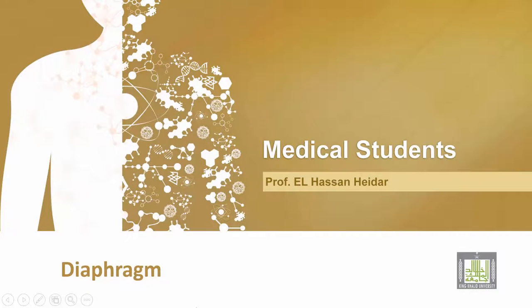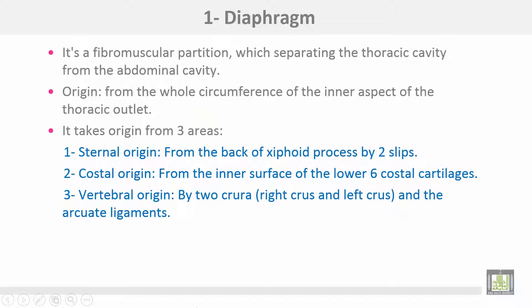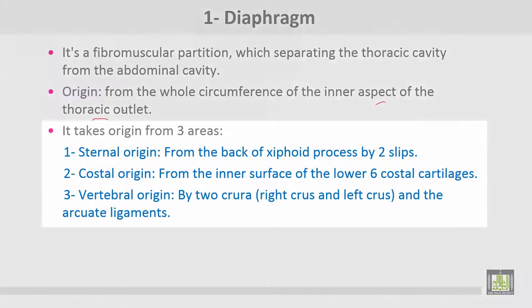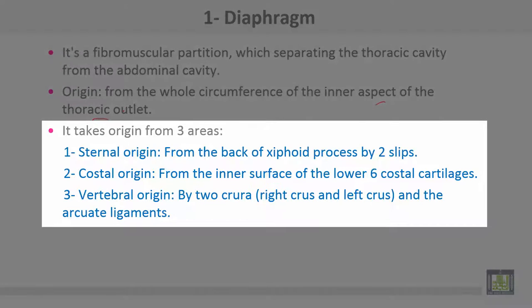The diaphragm is a fibromuscular partition separating the thoracic cavity from the abdominal cavity. It takes origin from the whole circumference of the inner aspect of the thoracic outlet from three areas. Number one: sternal origin, from the back of the xiphoid process by two slips. Number two: costal origin, from the inner surface of the lower six costal cartilages.